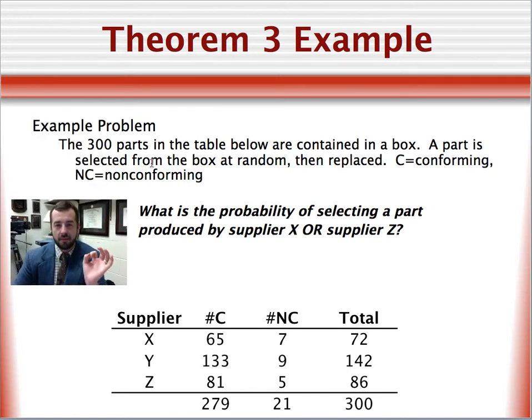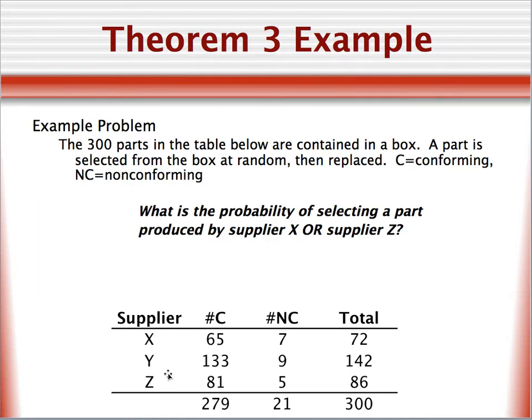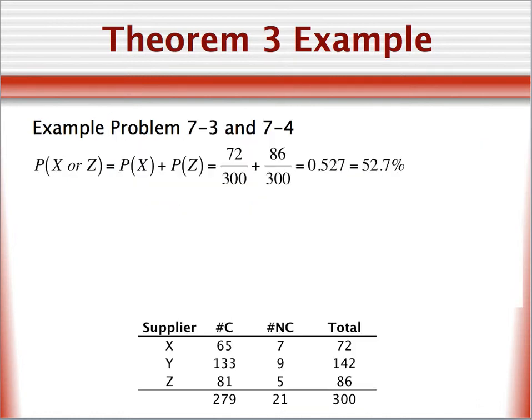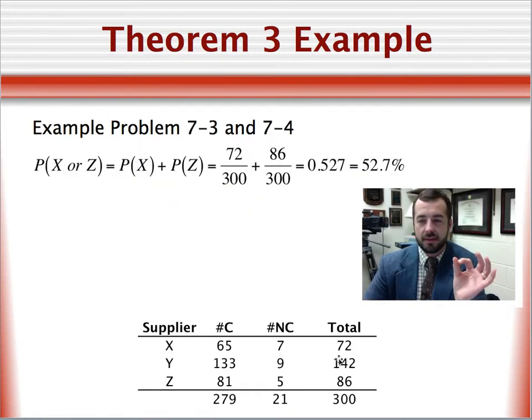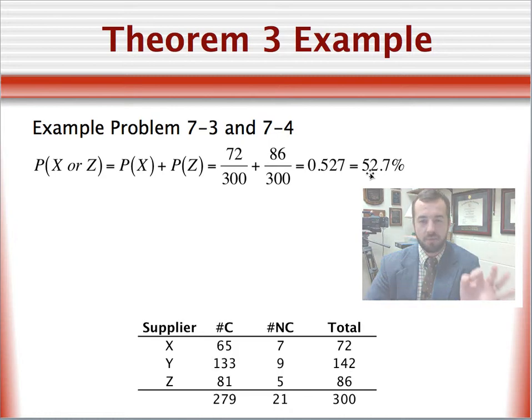For example, consider this problem where we have 300 parts in a box. These parts come from three different suppliers, and here we have columns representing how many parts are conforming, and how many are non-conforming, and we have their totals here, a total of 300 parts. What is the probability of selecting a part produced by supplier X or supplier Z? Take a minute to think of how you would calculate this. All we have to do is take the sum of all the parts from supplier X, 72, divide that by 300, and then add all of the parts coming from supplier Z, and divide those by 300, and we add these two terms, so we get 52.7% that we'll pick apart from one of these two suppliers.